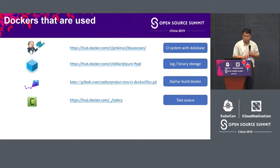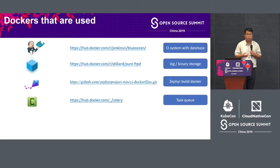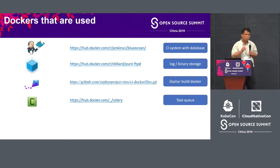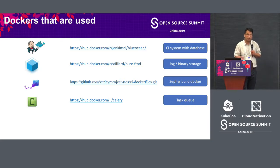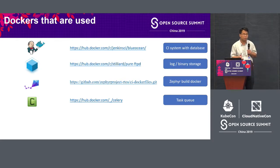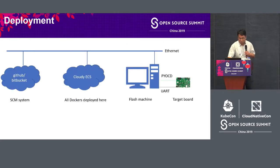These are the Dockers we are using: Jenkins Docker for the CI system with database, an FTP Docker, and a Zephyr build Docker where all compilation is realized. We also have a task queue. When adopting an open-source framework, it's better to write less custom code, because open source has a long lifespan and many external contributors. Creating new frameworks leads to complex systems that are difficult to explain and maintain.